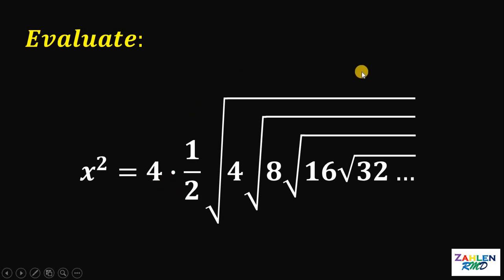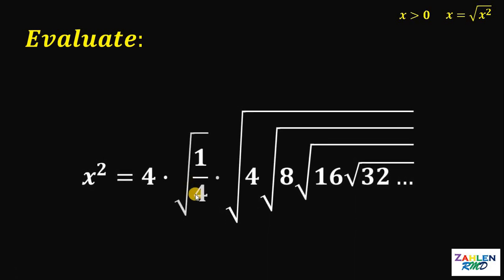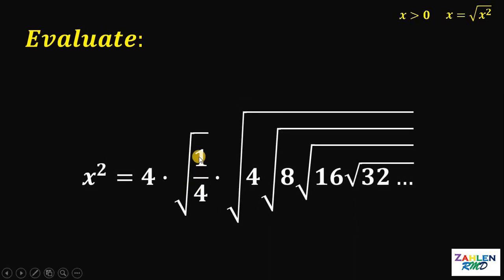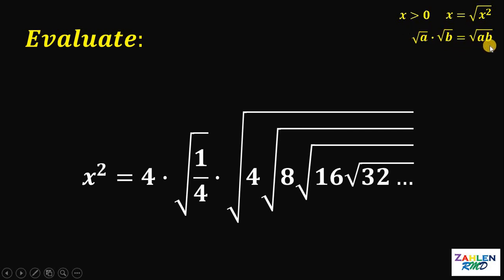At this point, let's use some properties of radicals. If we have x, it is equivalent to the square root of x squared, provided that x is greater than or equal to 0. Using this property, one-half can be written as square root of one-fourth, because one-half squared is just one-fourth. Now let's use the law of radicals: if we have square root of a times square root of b with the same index, that is equivalent to square root of a times b.